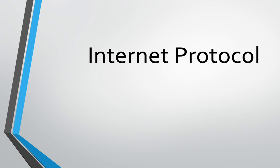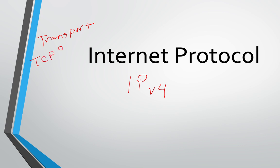Now, the most common protocol at the network layer — just as in transport layer we saw TCP and UDP as the most common — at the network layer, the most common protocol is IP: Internet Protocol version 4. There are others, like AppleTalk, but IPv4 is the most common, which is why we look into it.